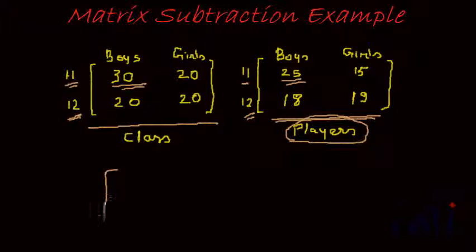So if we do it, what do we get? We get 30 minus 25 which is 5. Girls, total number of girls in class 11, and total number of players who are girls in class 11 is 15. So the difference between them is 5.